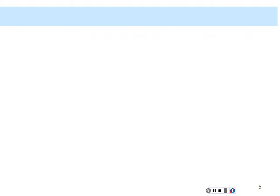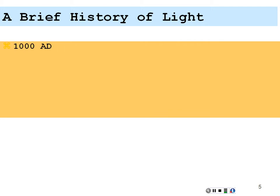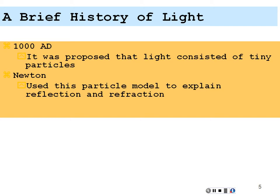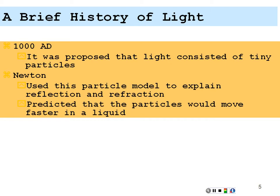Here's a brief history of light. Around 1000 AD, it was proposed that light consisted of tiny particles traveling from one place to another. Newton used this particle model to explain reflection and refraction, and he predicted that the particles would move faster in a liquid because the molecules would use their gravity to pull the light forward. This is probably one of the very few places where Newton was actually wrong — he was right to assume the particle model of light, but wrong that light would move faster in a liquid; it actually moves slower.